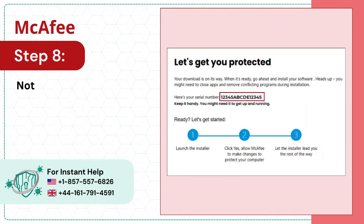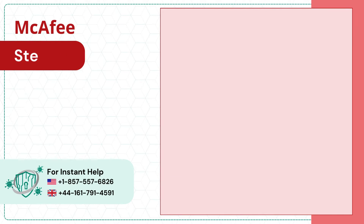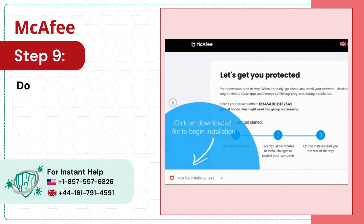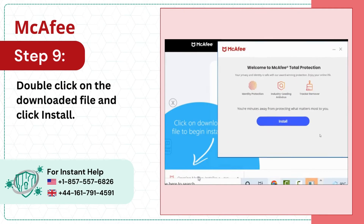Step 8: Note the serial number shown on the screen. Step 9: Double click on the downloaded file and click install.